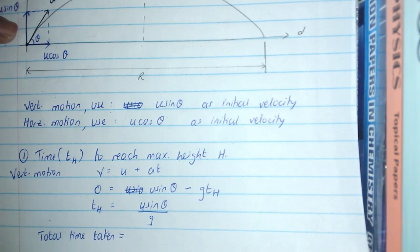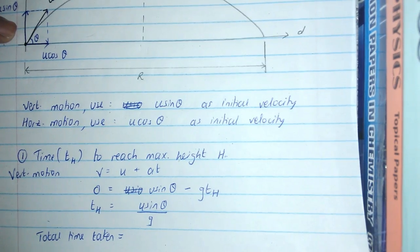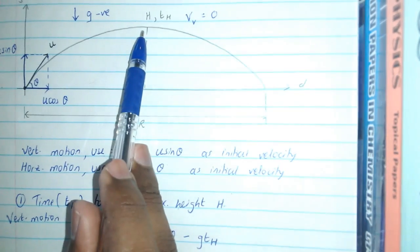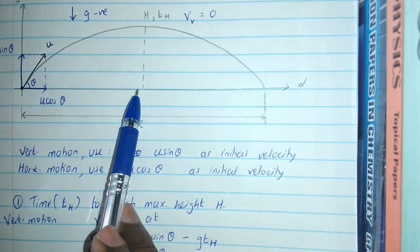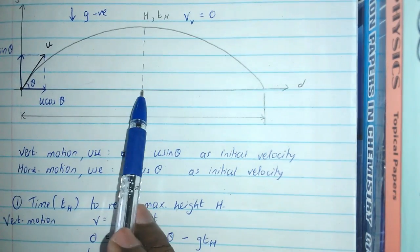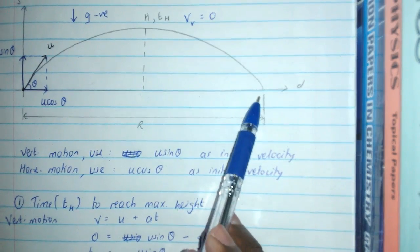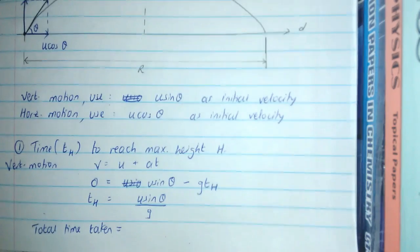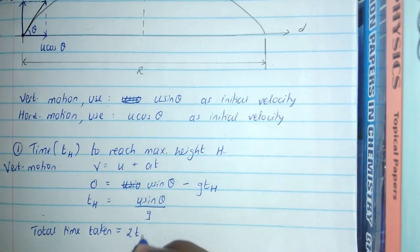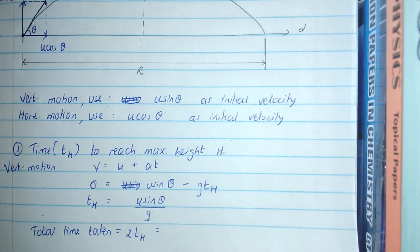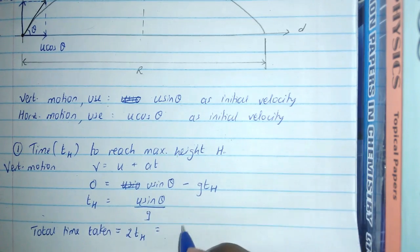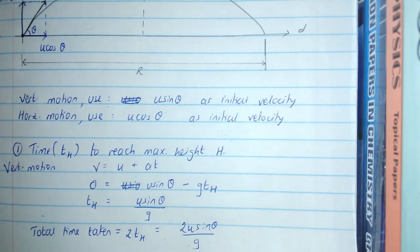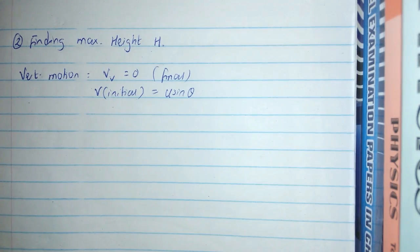From th we can calculate the total time taken for the whole trajectory. Because the object takes time th to reach the highest point, by symmetry it takes the same time th to come back down. So the total time of flight is 2·th, which gives 2u sinθ / g.